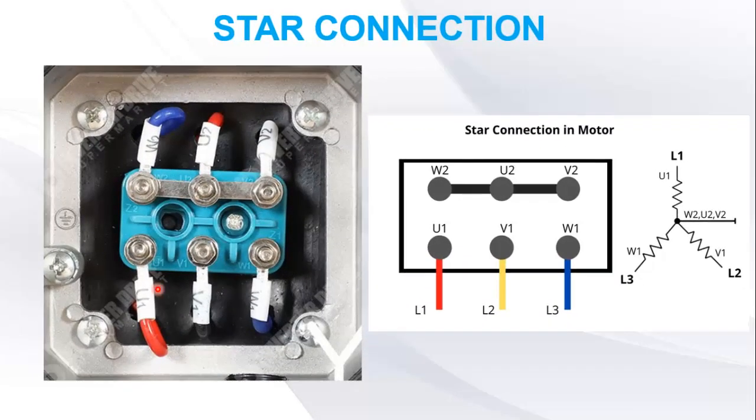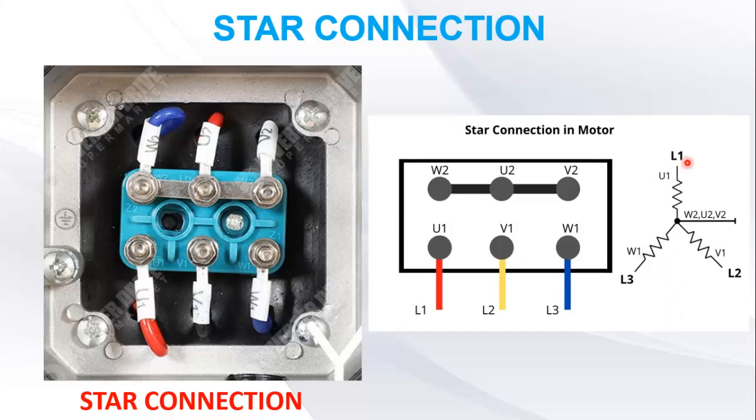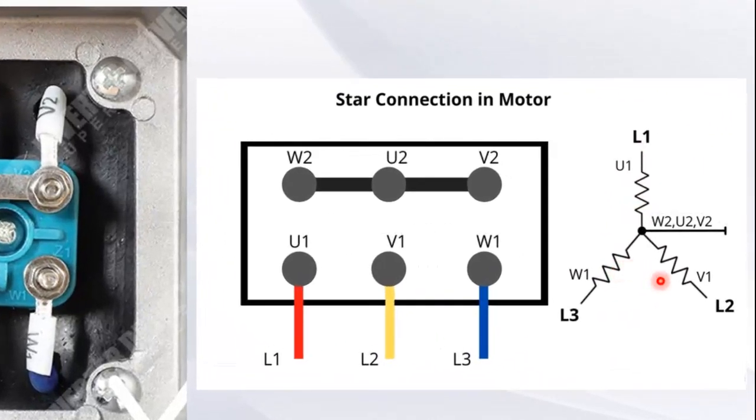Let's get started with star connection. On my right you can see three sets of windings are connected in star formation, in which one end of each winding is shorted together. In order to better understand, you can see there are six terminals on the motor which are labeled as W2, U2, and V2, and U1, V1, and W1.